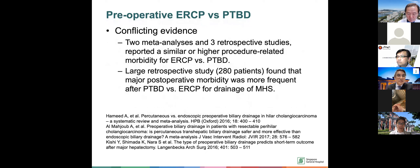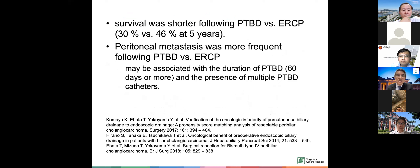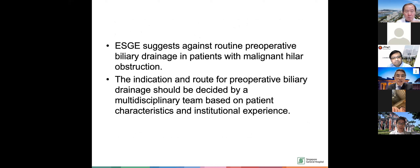Regarding PTBD versus ERCP, there is conflicting evidence. Some studies show similar results, but one study found postoperative morbidity was more frequent after PTBD versus ERCP for hilar strictures pre-surgery. They also found slightly shorter survival and more frequent peritoneal metastases with PTBD, suspected to be due to peritoneal catheter crossing causing seeding. ESGE guidelines don't suggest draining before surgery routinely, but if drainage is desired, a multidisciplinary setting should decide the best modality.